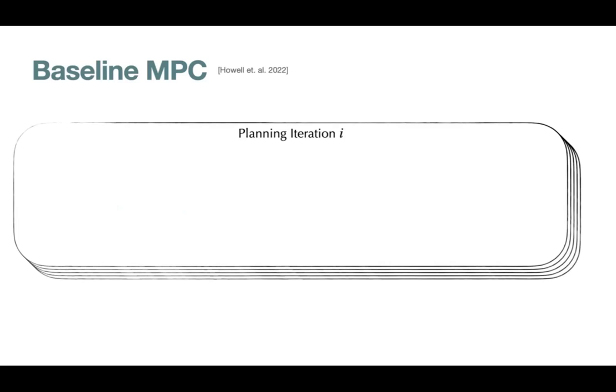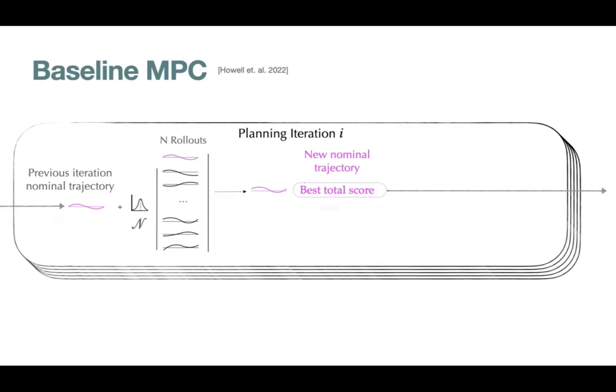Our implementation builds on MuJoCo MPC, a framework for running model predictive control on different tasks. In the sampling planner, at each planning iteration, the nominal policy is used to warm start N rollouts, out of which the trajectory with the best total score is set as the new nominal policy. Despite its simplicity, this planner has proved capable of solving many tasks.